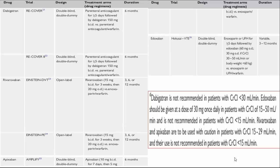It is important to know the initial doses for the various NOACs — dabigatran, rivaroxaban, apixaban, and edoxaban — and their renal limitations. Dabigatran is not preferred at creatinine clearance below 30 mL/min. Edoxaban should be reduced to 30 mg once daily if creatinine clearance is between 15 and 30 mL/min. The same applies to rivaroxaban. All NOACs are contraindicated at creatinine clearance below 15 mL/min.